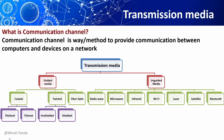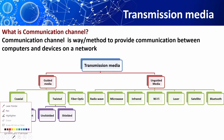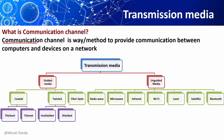Transmission media is of two types: one is wired media or guided media, and the second one is wireless media or unguided media. In wired media, medium characteristics are important, whereas in wireless media, signal characteristics are more important.